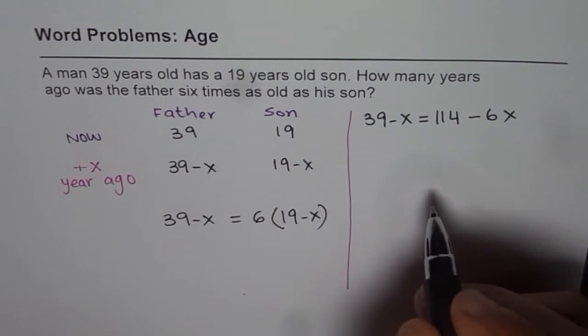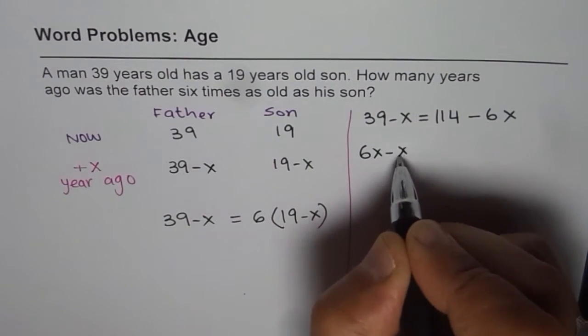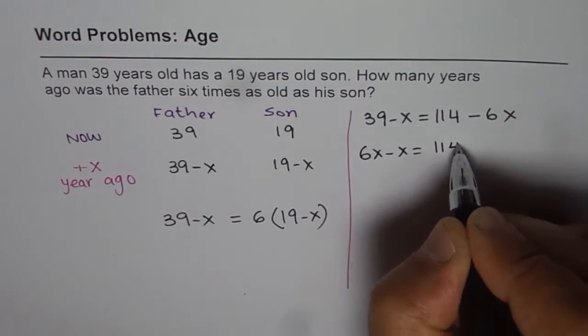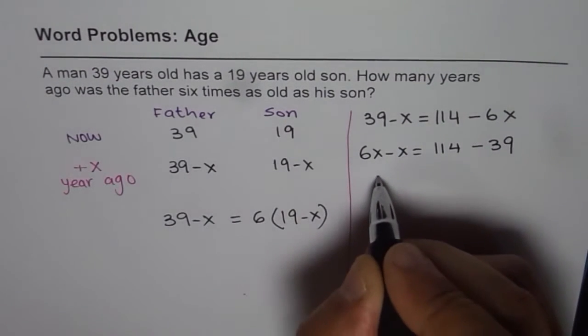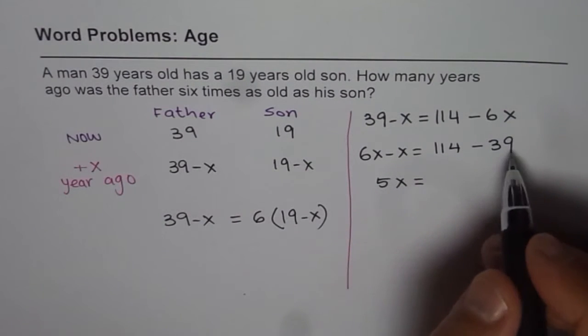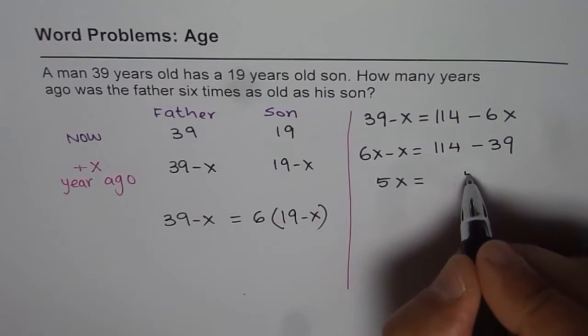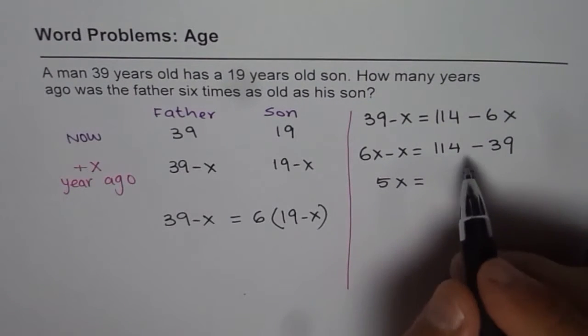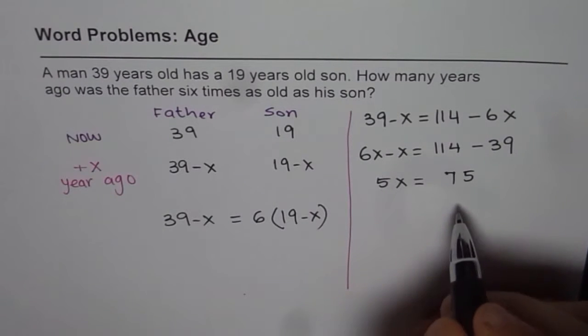Now you can bring the variables together. 6x minus x equals 114 take away 39. 5x equals 114 take away 39. So let us borrow. So get 5, and then from 10 it is 7. So it is 75.